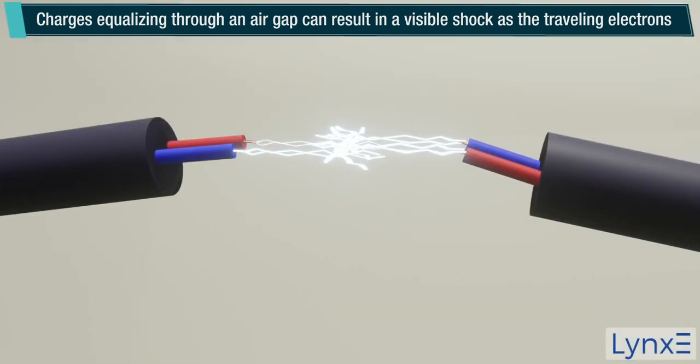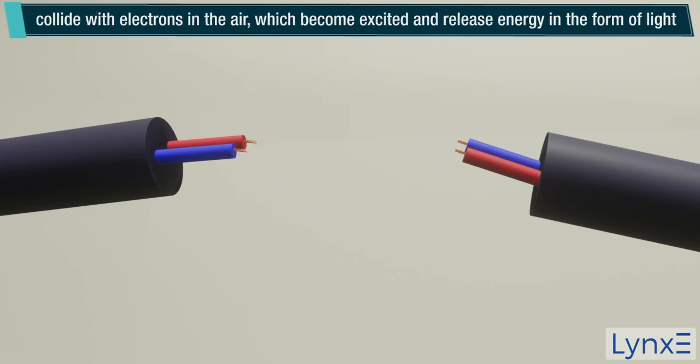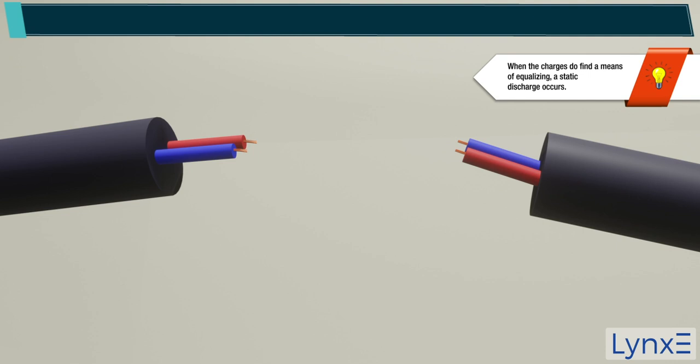Charges equalizing through an air gap can result in a visible shock as the traveling electrons collide with electrons in the air, which become excited and release energy in the form of light. When the charges do find a means of equalizing, a static discharge occurs. The attraction of the charges becomes so great that they can flow through even the best of insulators: air, glass, plastic, rubber, etc. Static discharges can be harmful depending on what medium the charges travel through and to what surfaces the charges are transferring.